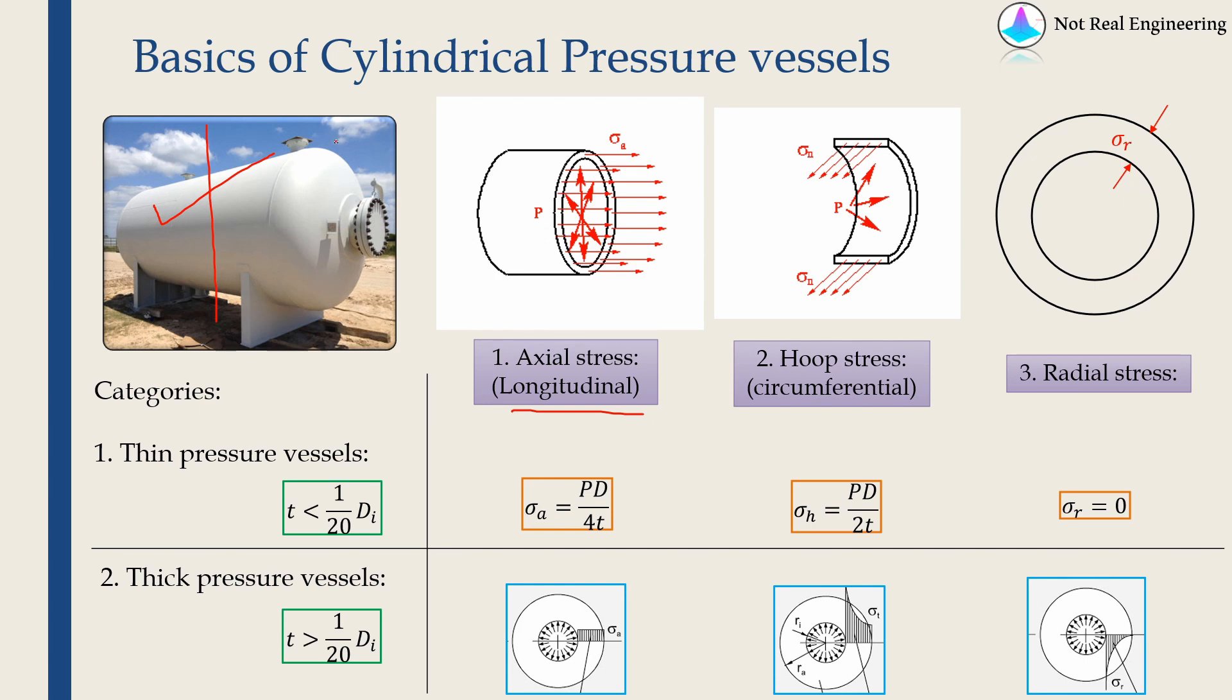Then if you take a vertical section something like this, you will find the stress which is along the circumferential direction, which is also known as hoop stress. And finally, if you see the thickness of the pressure vessel, you will find stress acting along the radial direction.